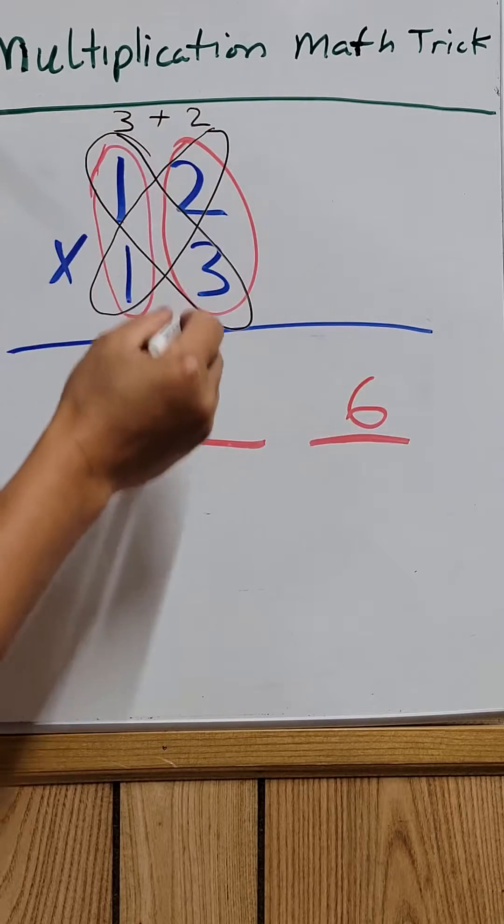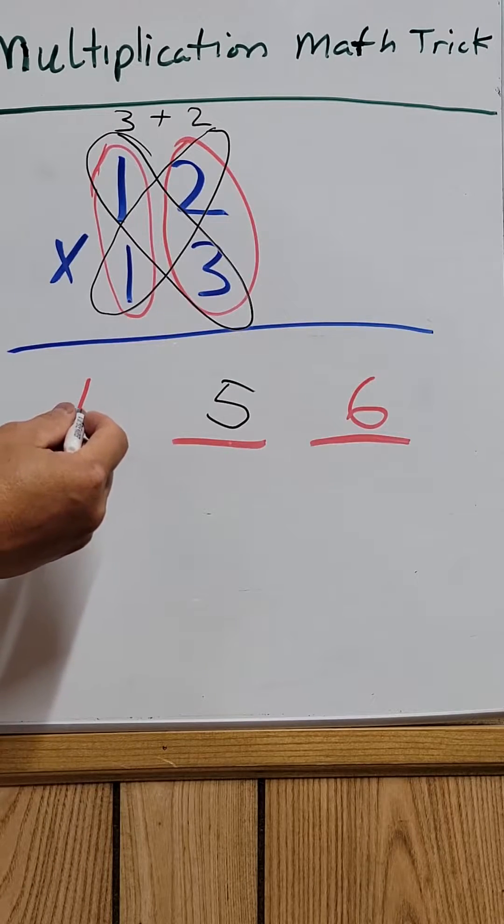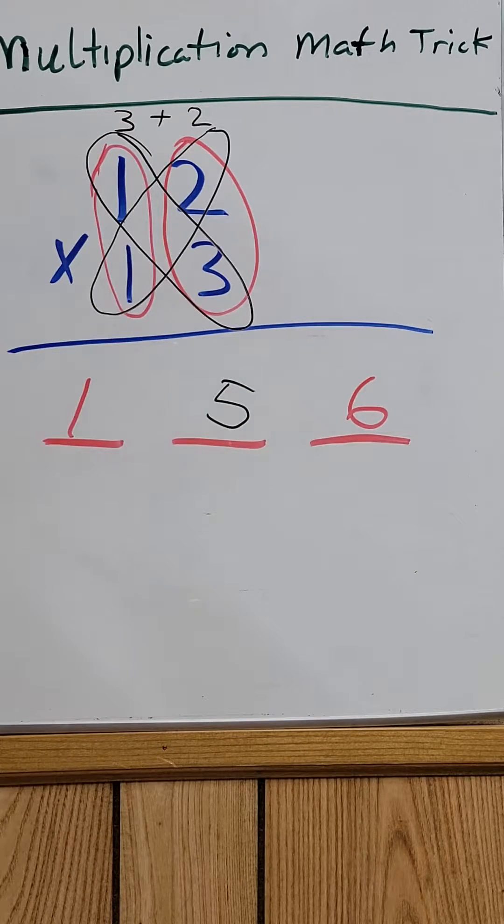Right here, 3 plus 2 equals 5. So the answer is 156. That's how you find the middle number.